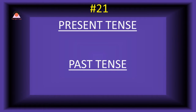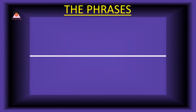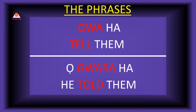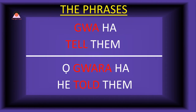Word number twenty-one: 'gua,' meaning 'tell.' The past tense of gua is 'guara,' meaning 'told.' Present tense phrase: 'gua-ha' — tell them. Past tense: 'o-guara-ha' — he told them.